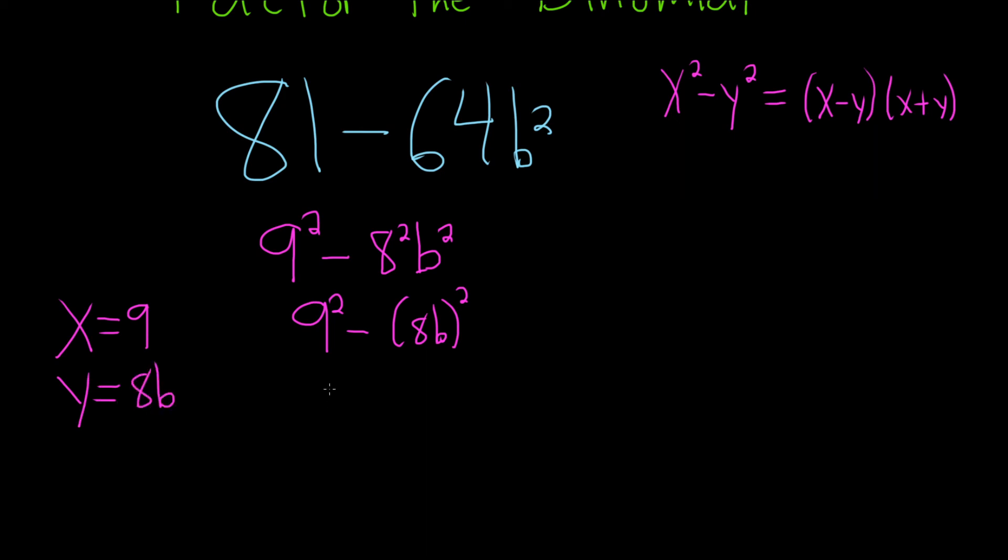So this will be equal to (9 - 8b)(9 + 8b). And that would be the factored form. I hope this video has been helpful.